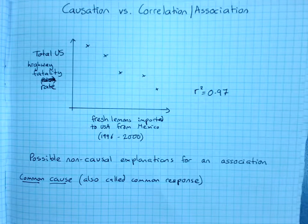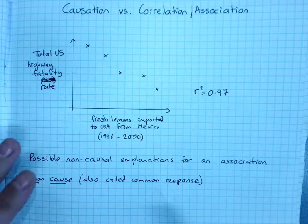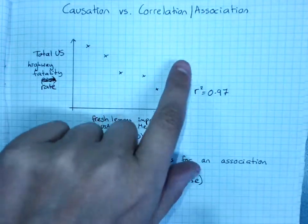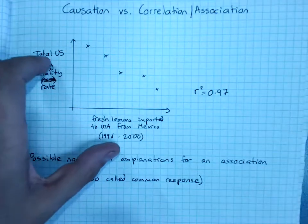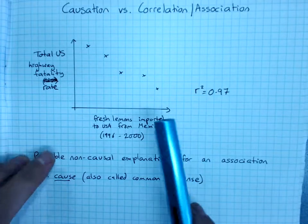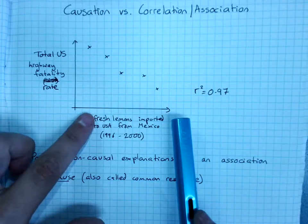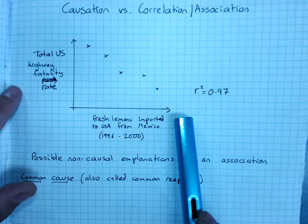Causation versus correlation or association. We've spoken before about the fact that a really strong correlation or association between two variables doesn't necessarily imply that a change in one causes a change in the other.